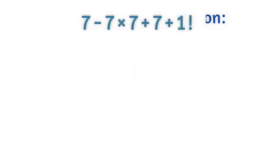So the problem is 7 minus 7 times 7 plus 7 plus 1 factorial. What does this equal to?